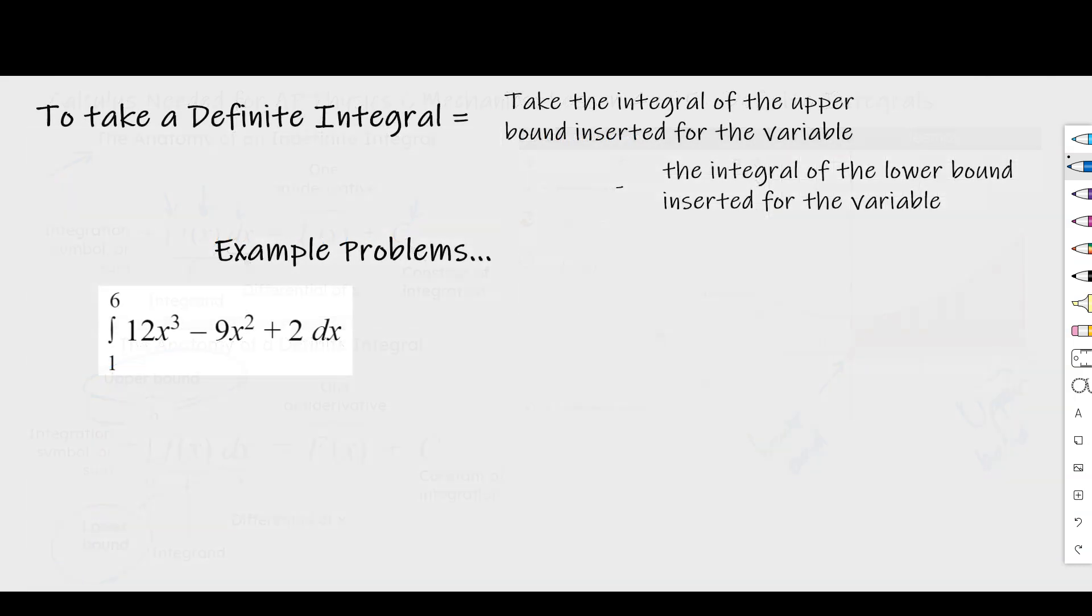So what I would like to do next is to take a look at the major strategy for definite integrals, and then do some example problems and see how it goes. So first of all, to take a definite integral, what we're going to do is take the integral of the upper bounds inserted for the variable minus the integral of the lower bound inserted for the variables. Let me show you what I'm talking about with this. We have our polynomial function, our integrand right here, and so we're going to say this is equal to 12 times x to the third.